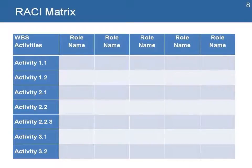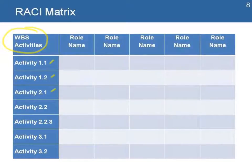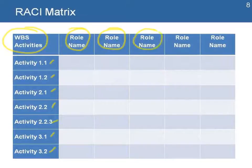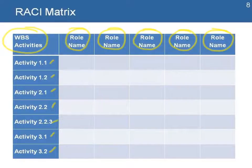Let's look at the matrix. We use descriptions and information from our WBS, where we list all our activities in one column, and then we add columns for each one of the roles in the team, placing the names of each person — the project manager, technical people, administrative staff, and everybody involved in activities in the project.